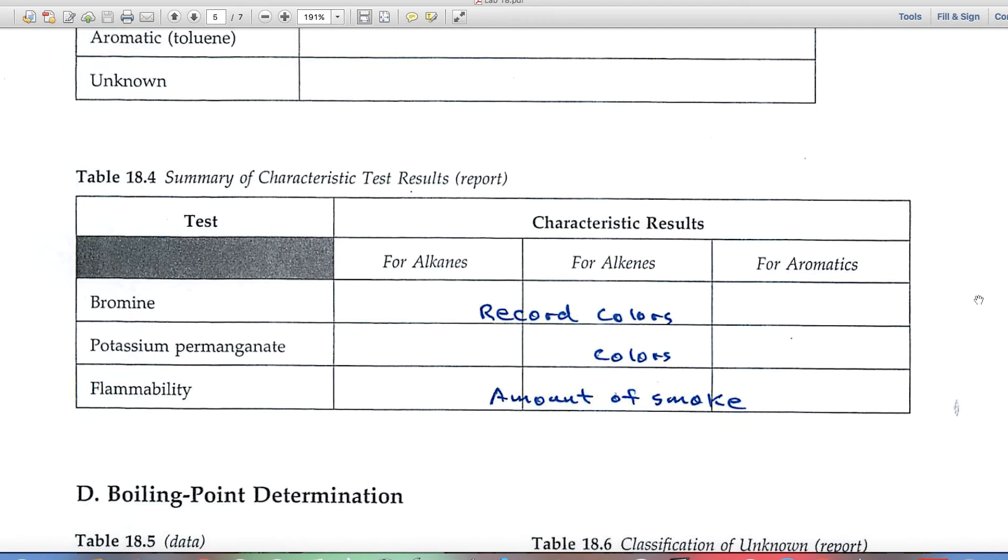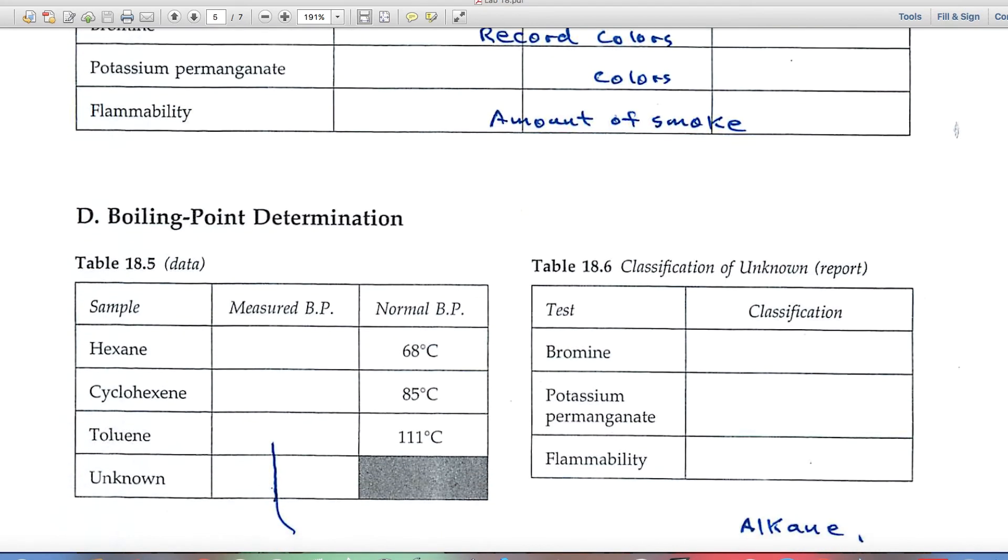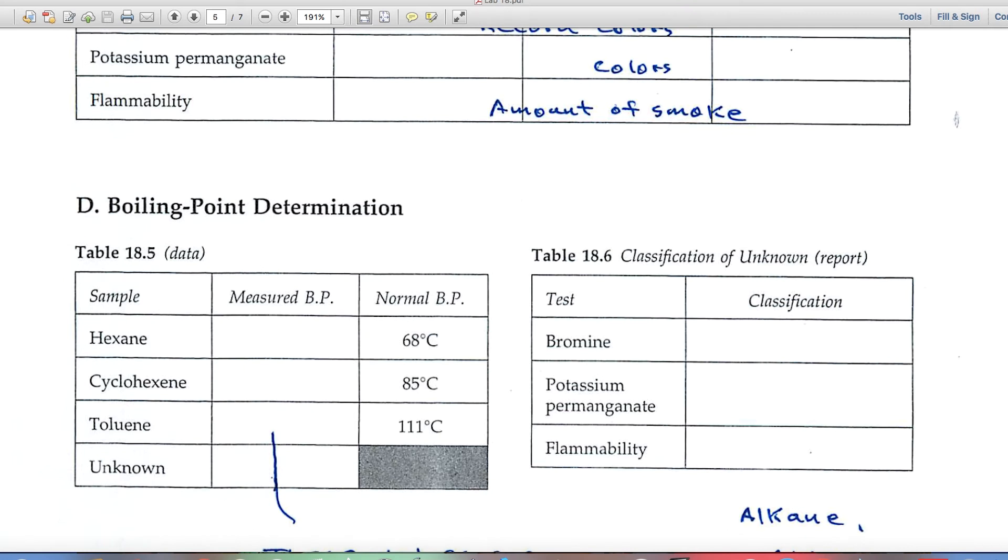And then table 18.4 is a summary now of all the results so far, the reaction with bromine, the reaction with potassium permanganate, and the flammability test. And you'll come back to this table and correlate so that you can identify your unknown as either an alkane, alkene, or an aromatic.